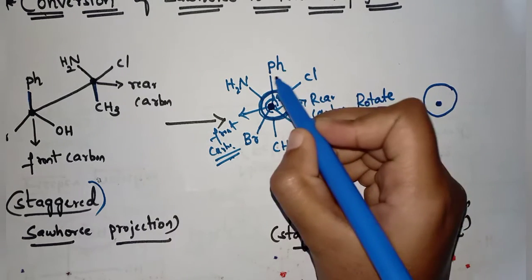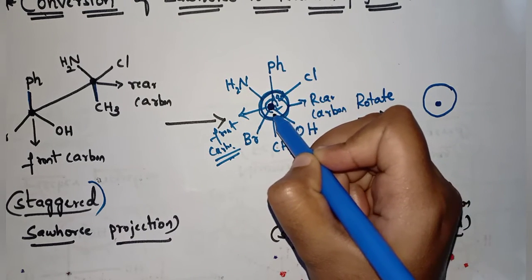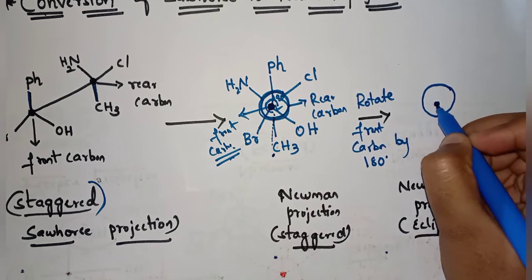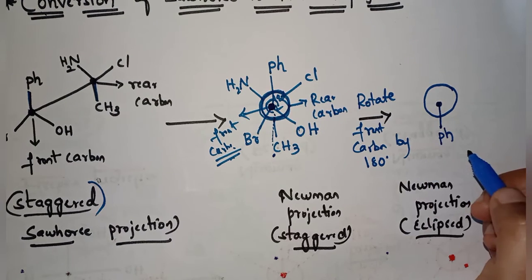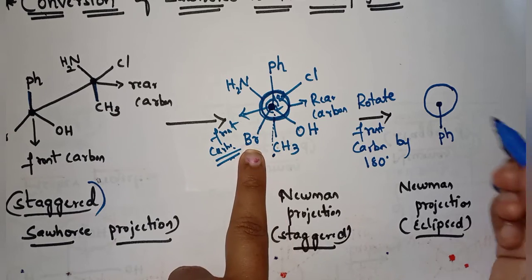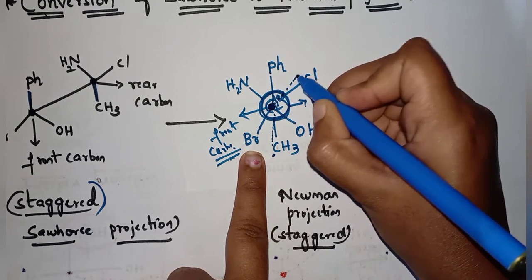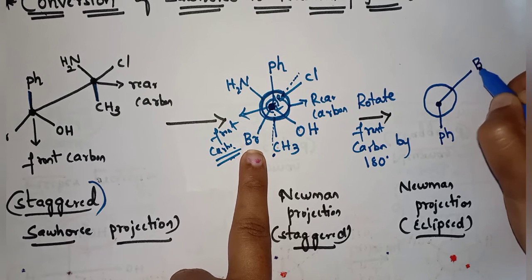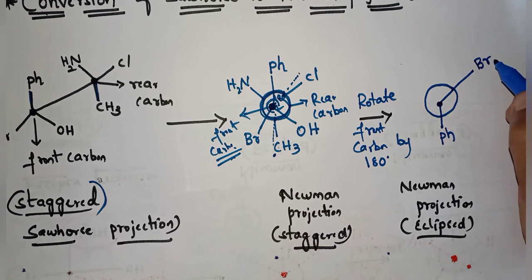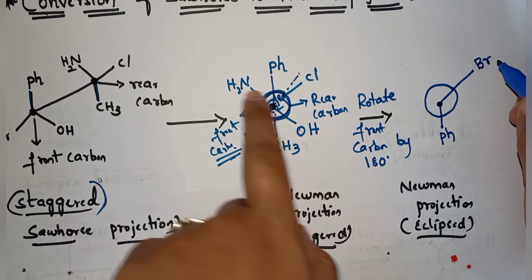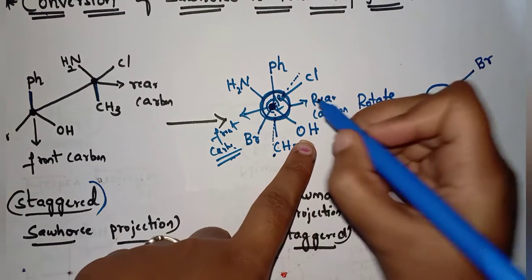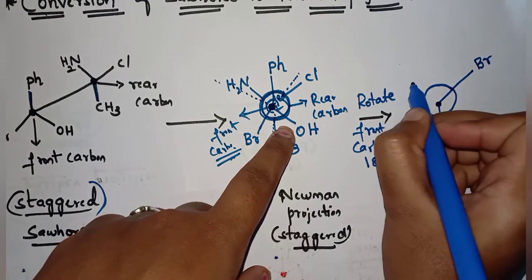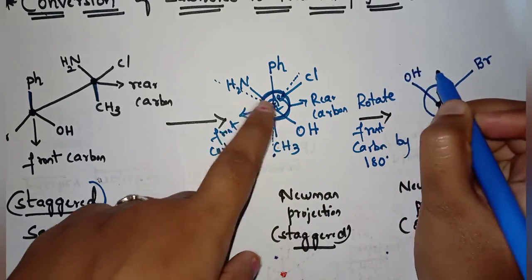If I rotate phenyl by 180 degrees, it comes exactly opposite to its original position, so I represent phenyl here. If I rotate Br by 180 degrees, it comes exactly opposite, so Br goes here. Similarly, rotating OH by 180 degrees — since it is on the front carbon — it comes exactly opposite, so I represent OH here.